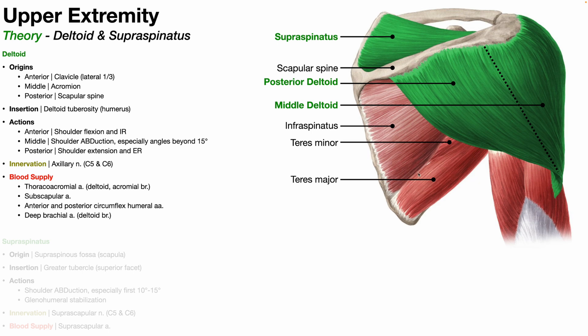We can also see several of the rotator cuff muscles. In the infraspinous fossa region we have the infraspinatus, and over here is the teres minor. Down here is the teres major — not a true rotator cuff muscle — originating from the inferior angle of the scapula. The supraspinatus muscle, also colored green, is visible here. In real life it's covered by the upper trapezius, but the upper trap has been removed here. Part of the upper trapezius inserts on the spine of the scapula.